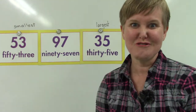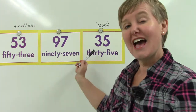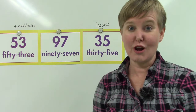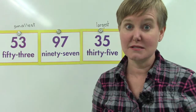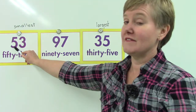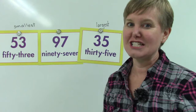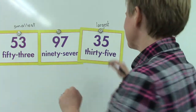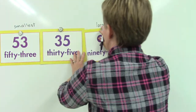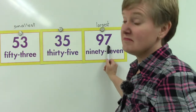Here I have three new numbers: 53, 97, and 35. I bet you right away you can tell which one is the biggest. Look at the tens place — we have a five in the tens place, a nine, and a three. Which one would be the largest? Yes, did you say 97? 97 is our largest number. It has nine groups of ten and seven ones.